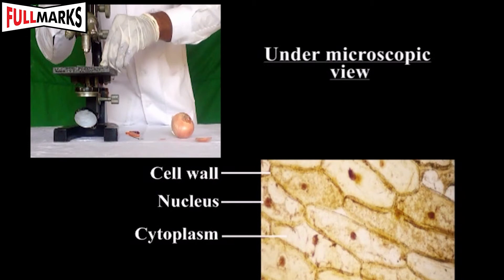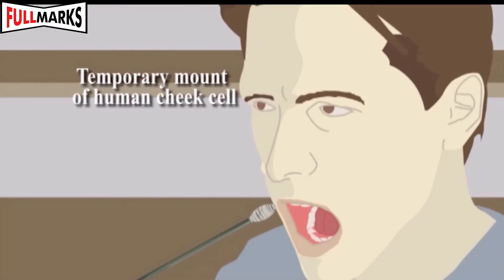Observation: the cells observed are plant cells. They consist of a cell wall and large vacuoles, and the nucleus is very prominent and clearly visible. Inference: plant cells have a cell wall, and the nucleus is prominent and present at the periphery of the cytoplasm.